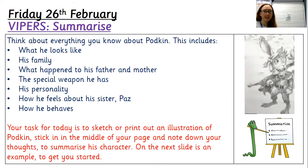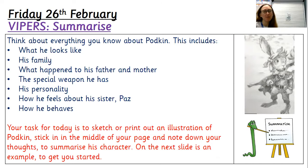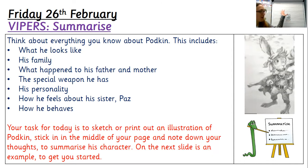Your task for today is, first of all, to sketch or print out an illustration of Podkin. If you find sketching tricky, you could just write the word Podkin in the middle of your page, or draw a quick outline of rabbit ears and a head — something simple that works for you. Then around the outside, I'd like you to note down your thoughts all about Podkin to summarise his character. On the next slide I'm going to show you an example to get you started and model how I would build in my ideas, reflecting on what I know about Podkin and his character.